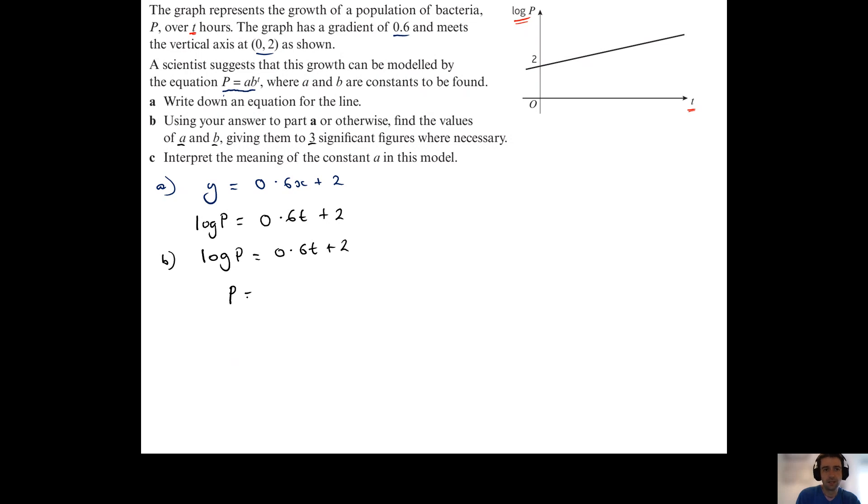So what that means is I can rewrite this as p equals 10 to the power of 0.6t plus 2. And it's very important that I have this bracket here, because if this is log base 10 of p, then p is equal to 10 to the power of this whole right hand side of the equation.